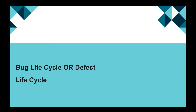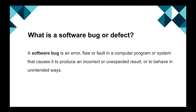Today we will be discussing about bug lifecycle or defect lifecycle. What is a software bug or defect? A software bug is an error, flaw or fault in a computer program or system that causes it to produce an incorrect or unexpected result, or to behave in unintended ways.